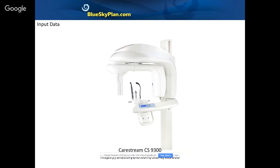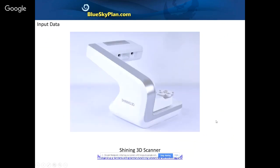Blue Sky Bio carries the CareStream CT scanner, which acquires the CT scan. The data output from a CT scanner is called DICOM files — it's the industry standard, similar to how Microsoft Word creates a Word file. The Shining 3D scanner, also carried by Blue Sky Bio, sells for five thousand dollars and is great for scanning models. It enables you to scan models and load them directly into Blue Sky Plan. If you don't have a desktop scanner, your local lab should be able to scan models and provide STL files.